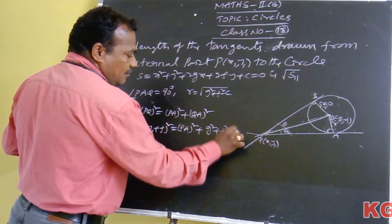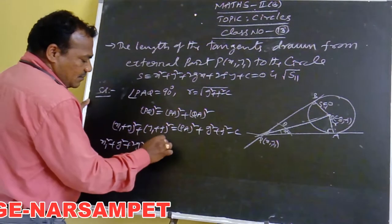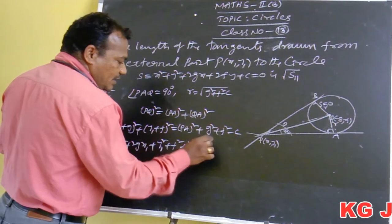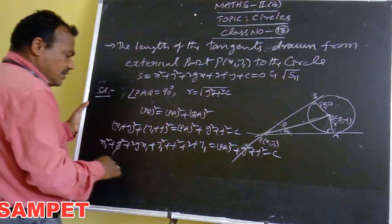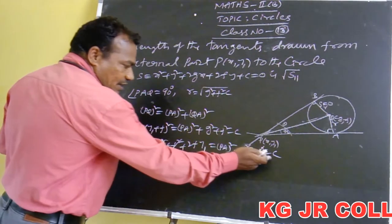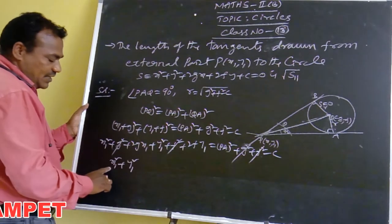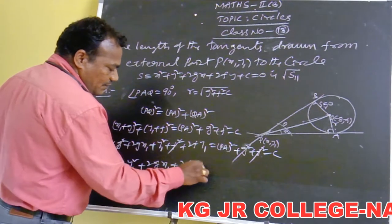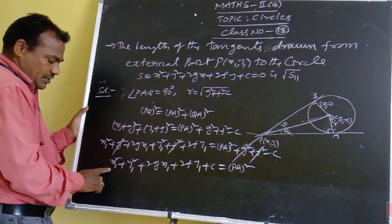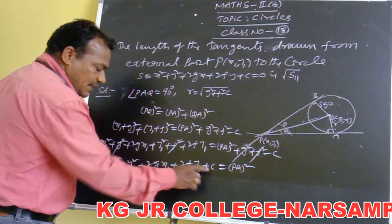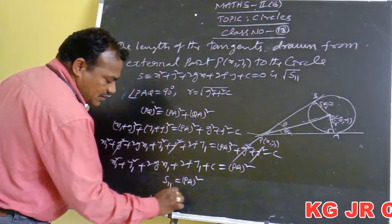Expanding: x₁² + g² + 2gx₁ + y₁² + f² + 2fy₁ = PA² + g² + f² - c. On both sides, g² cancels and f² cancels. Moving -c to the LHS, we get: x₁² + y₁² + 2gx₁ + 2fy₁ + c = PA². This expression is denoted as S₁₁.